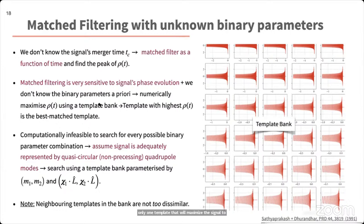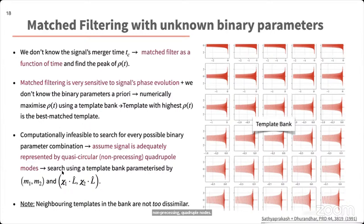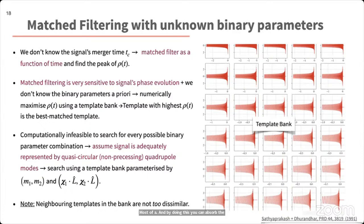Searching over a 14-dimensional parameter space is computationally very expensive. To reduce the cost, we assume the signal is adequately described by quasi-circular, non-precessing quadrupole modes. This allows us to absorb the extrinsic parameters into an overall amplitude and phase term, over which we can analytically maximize, so that constructing a template bank parameterized only by component masses m₁, m₂, and the aligned spin component is sufficient. More details can be found in the paper by Sathyaprakash and Dhurandhar.